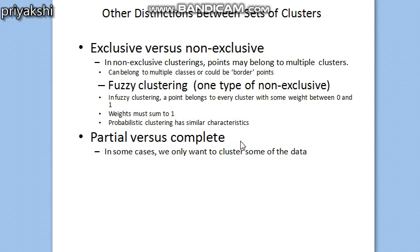A partial clustering will assign only some data objects to clusters, while a complete clustering assigns every data object to a cluster. The motivation for a partial clustering is that some objects in a data set may not belong to a well-defined group — many times, objects in the data set may represent noise, outliers, etc.